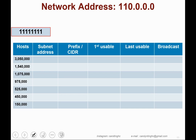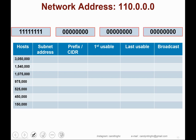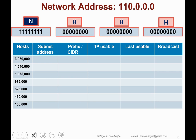The practice address is 110.0.0.0, which falls under Class A. In Class A, the first byte is the network portion and the remaining three bytes are host portions. Our first requirement is 3,050,000 hosts. Copy down the address 110.0.0.0 into your first row. According to the addressing table, to cater for 3,050,000 hosts you need to use slash 10 as your CIDR or prefix.